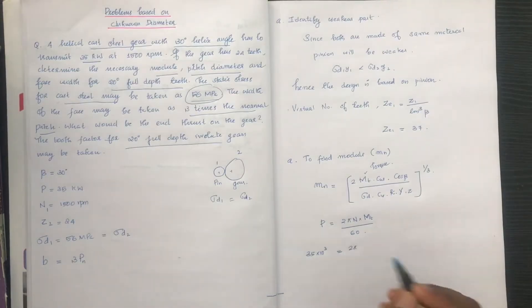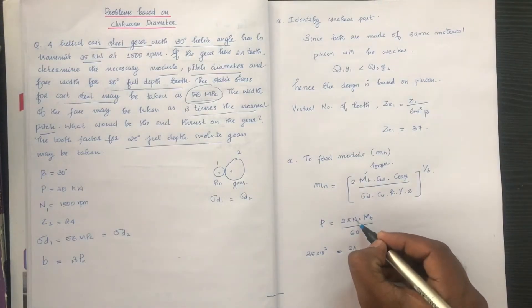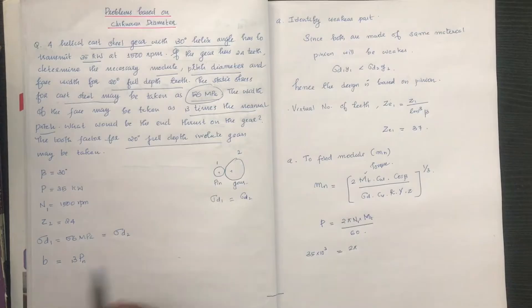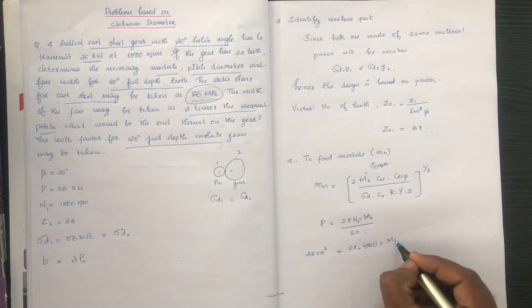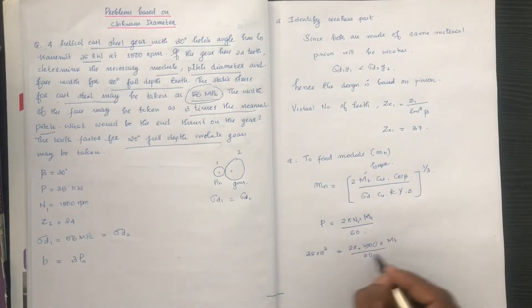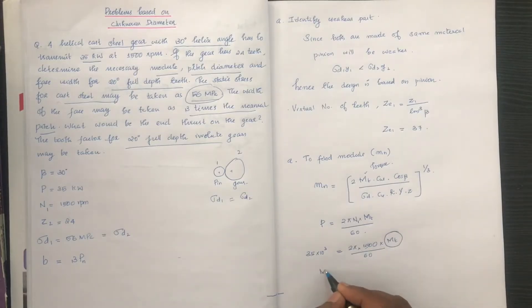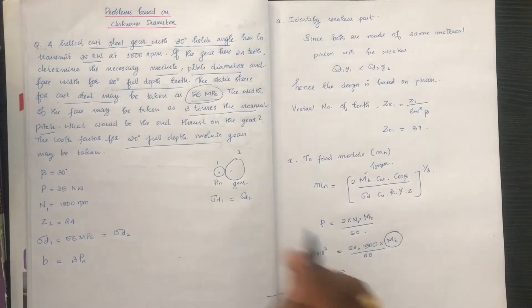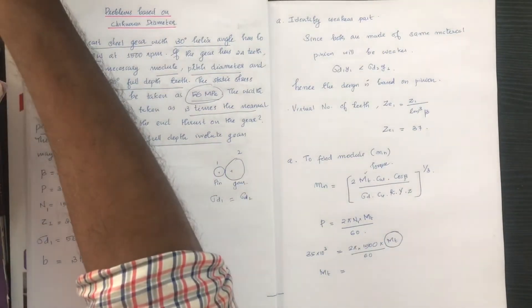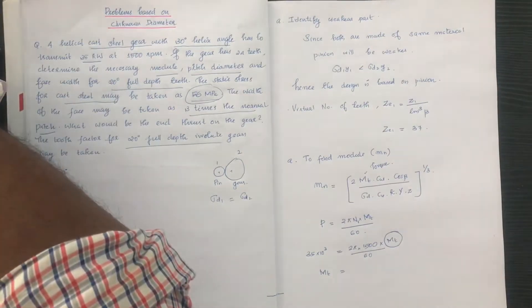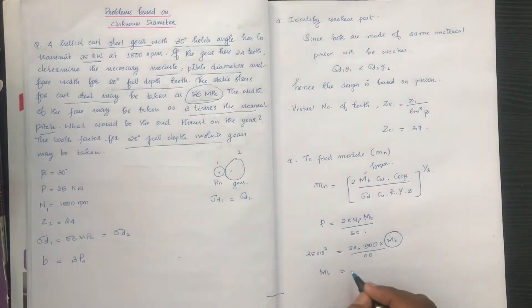With power 2P and N1 = 1500 RPM, we calculate Mt. The value of Mt comes out to be 222.82 Newton-meters.